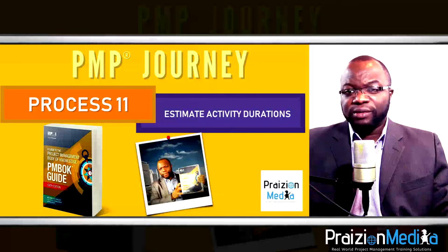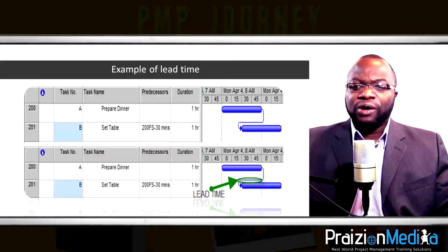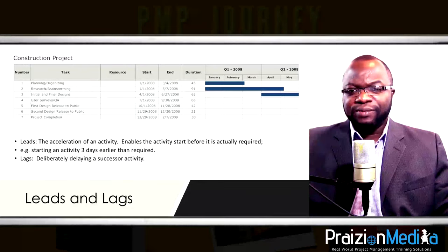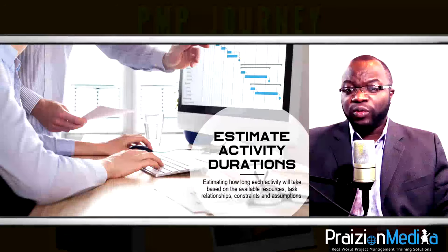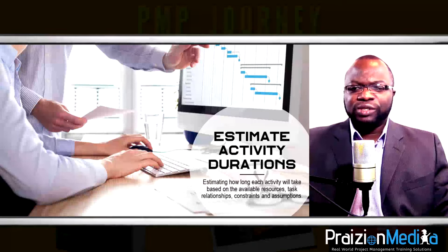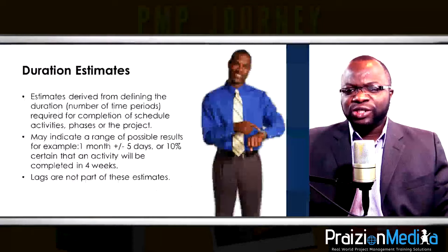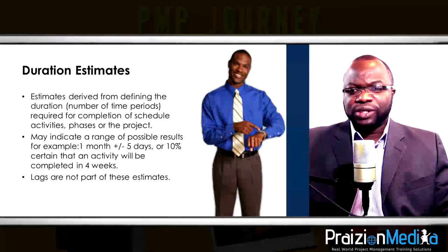Process 11: Estimate activity durations. Based on the resource needs and project parameters, you estimate how long it will take to work those hours. Are we talking about 50 hours worked in a week by one or two people, or 50 hours that needs to be spanned across several months because of lab results or other waiting periods? It really depends on the project.